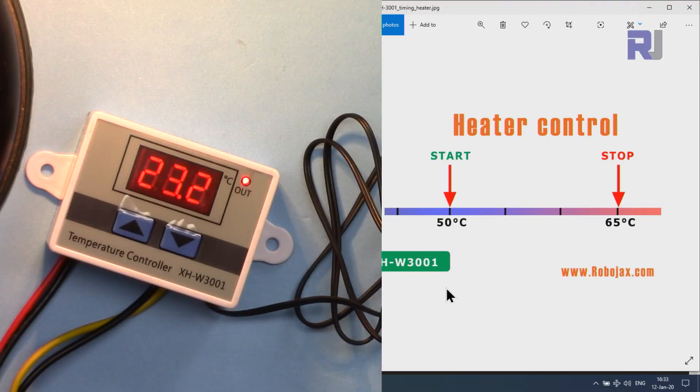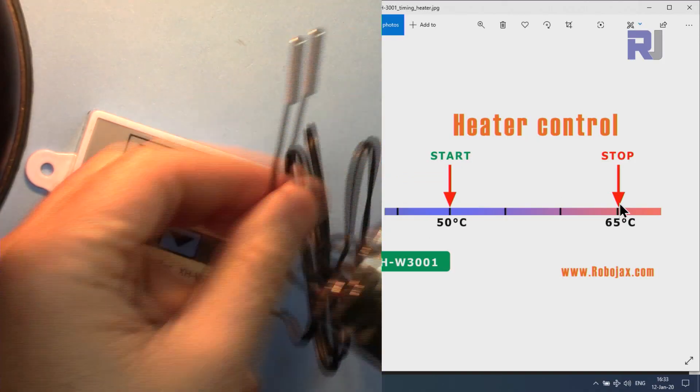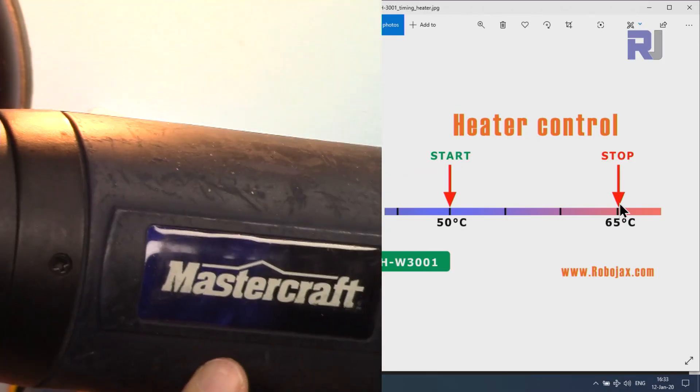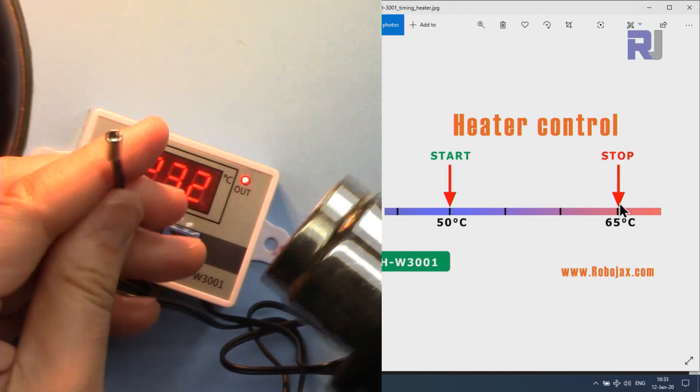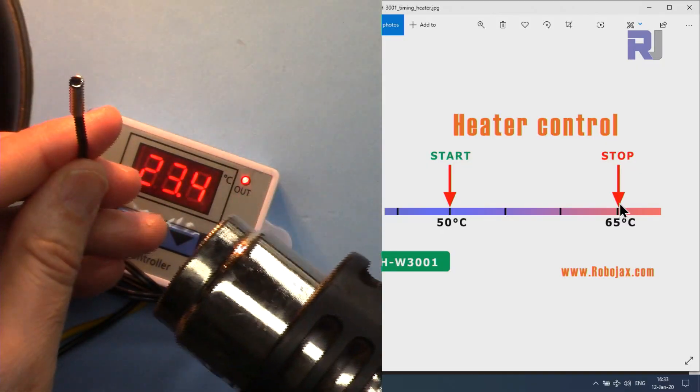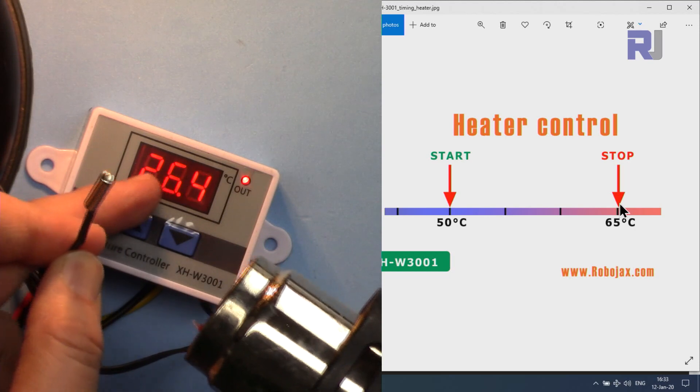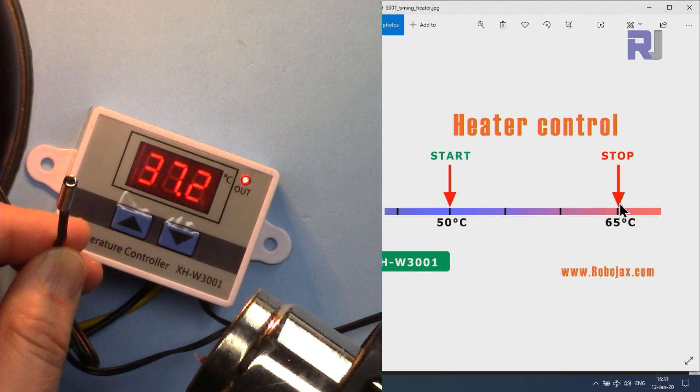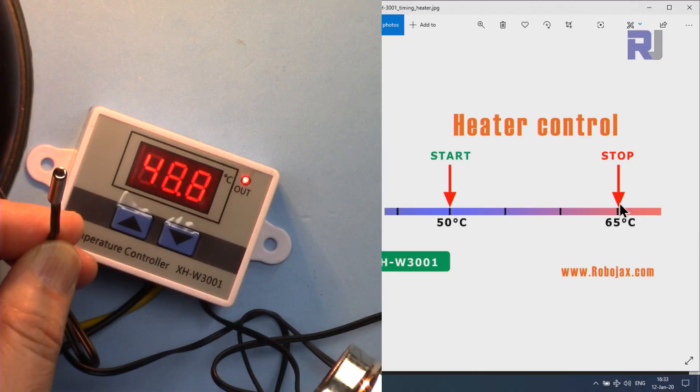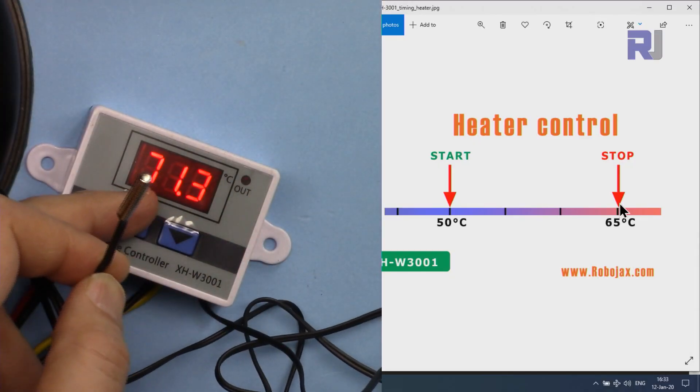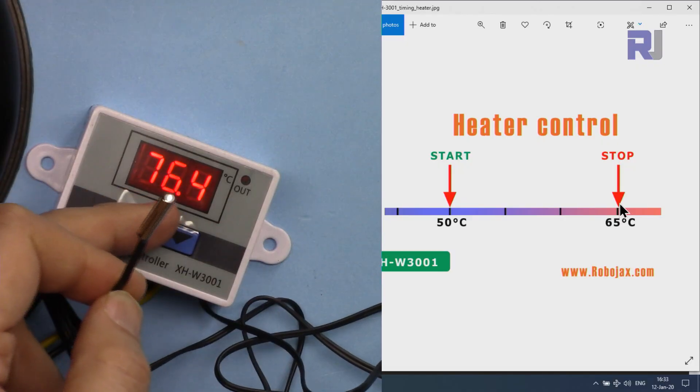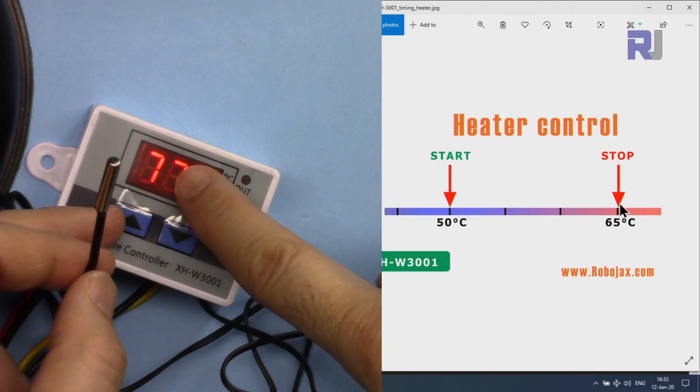So I'm going to heat this up and you will see it will stop at 65. So this is my heat gun, Mastercraft from Canadian Tire. Let's apply, and you can see the temperature here. At 65 it stopped.